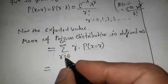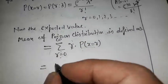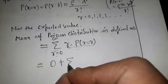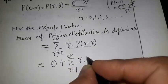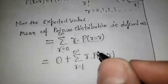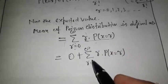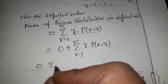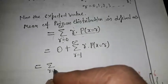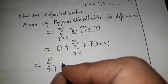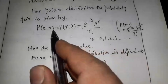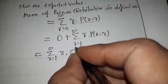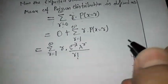For different values of r, if r is equal to 0 the first term is 0. So it can be written as summation r from 1 to infinity of r into p(x = r). Now p(x = r) equals e to the power minus lambda, times lambda to the power r upon factorial r. Since e to the power minus lambda does not depend on the summation, it can be taken outside.